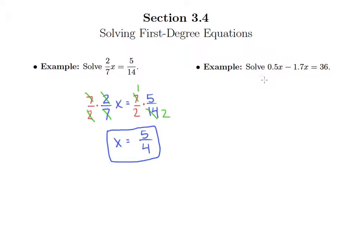The second one we have 0.5x minus 1.7x equals 36. So the first thing we need to do is simplify this left side. We can see there's some like terms I can combine, so I'm just going to need to take 0.5 minus 1.7. Let's find the difference between those.